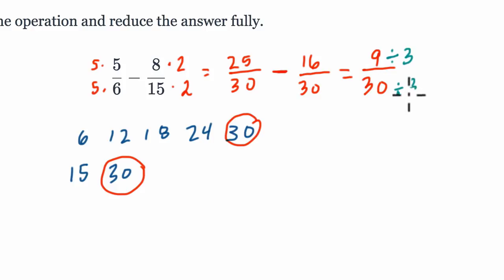I'm going to divide both of them by 3. What this does is scale the fraction back down. 9 divided by 3 is 3, and 30 divided by 3 is 10.